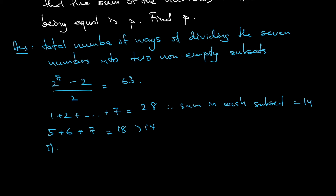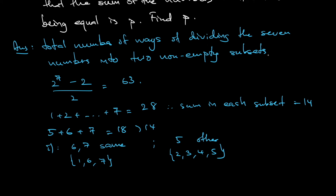Case 1: 6 and 7 are in the same subset, and 5 is in the other group. 6 plus 7 is already 13, so I only need 1 more to reach 14. That means the first subset is {1, 6, 7}, and the rest — {2, 3, 4, 5} — forms the second subset. That's one valid arrangement.